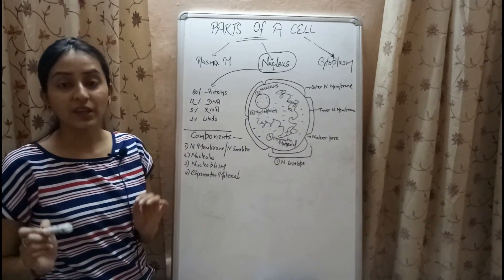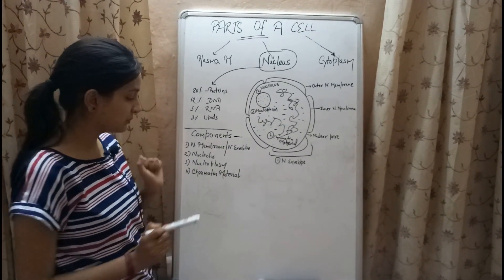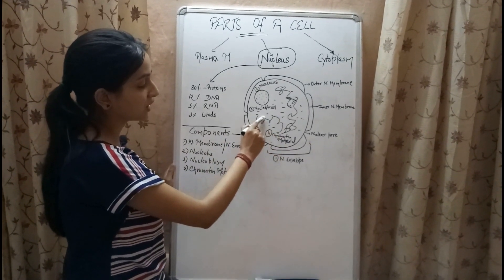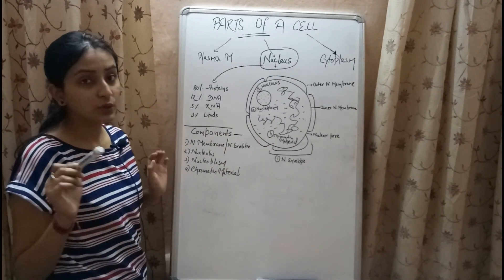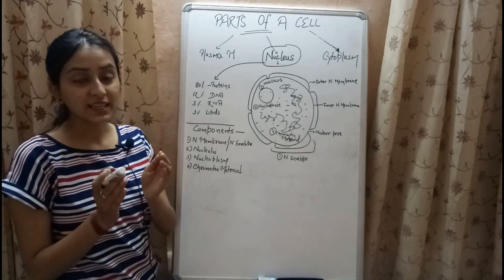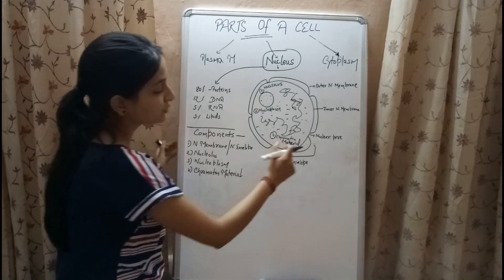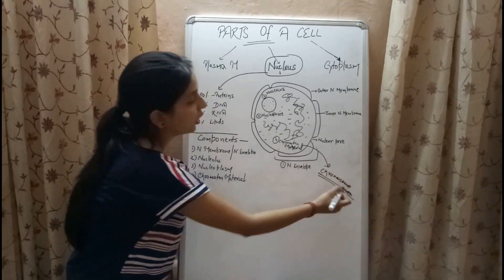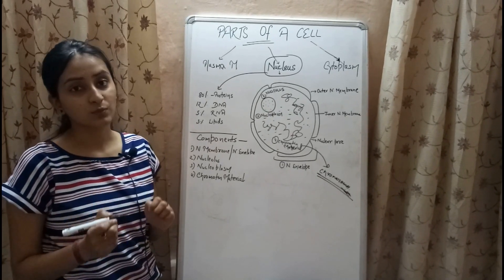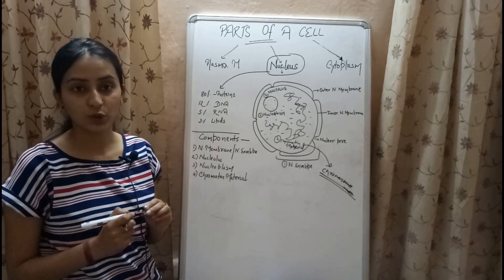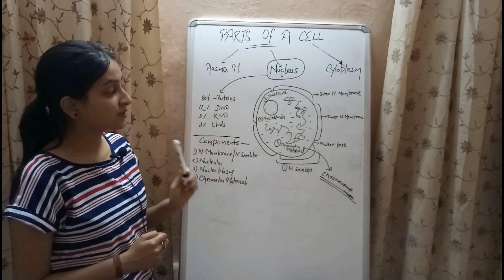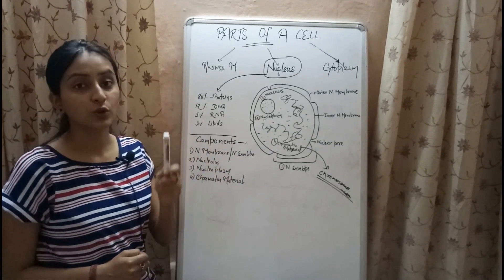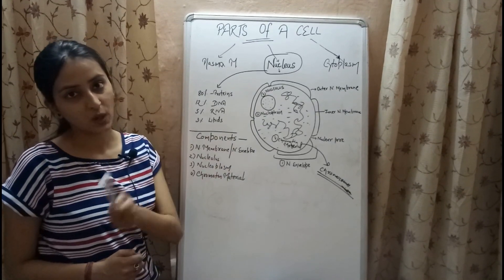The nucleoplasm is the sap present inside the nucleus, consisting of nucleotides and certain enzymes. The chromatin material is a network of thread-like structures inside the nucleus; during cell division it becomes thick and condensed to form chromosomes, which consist of DNA and proteins. The nucleus controls all cellular activities and is therefore known as the director of the cell. It is responsible for ribosome synthesis, contains genetic information, and transfers hereditary material from one generation to another.